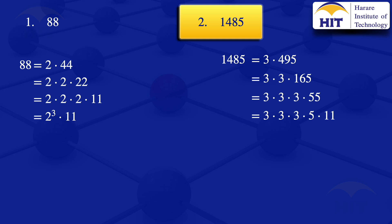We can rewrite this prime factorization as 3 to the power 3 times 5 times 11. So the prime factorization of 1485 is 3³ × 5 × 11.